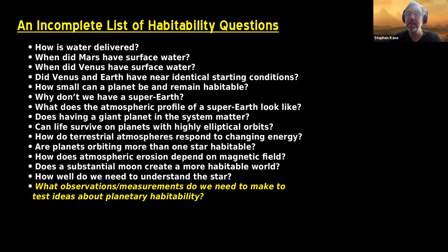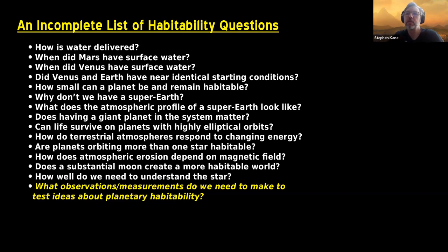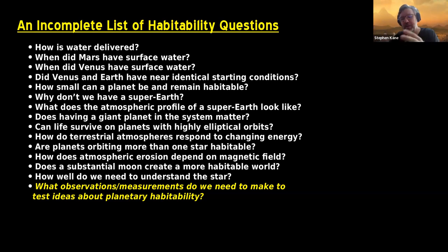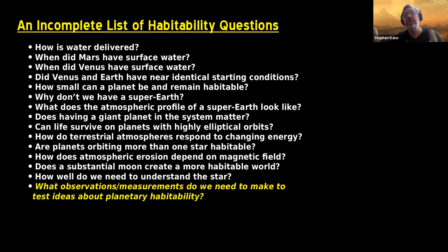We can see the dependency of energy output on stellar composition, which is a direct result of nuclear fusion in the core. When it comes to Earth, the Sun being 30 percent less luminous in the past raises questions: was Earth in a massive ice age? There are various solutions — you can have more greenhouse warming gases in the atmosphere, which relates to Earth's geology when it was very young. By understanding the change in the Sun's luminosity, you can understand the early history of the Earth as well.